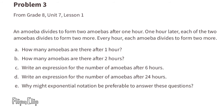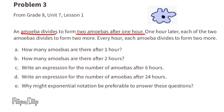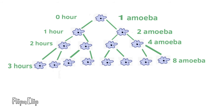Problem 3, from 8th grade Unit 7 Lesson 1: An amoeba divides to form 2 amoebas after 1 hour. One hour later each of those 2 divides to form 2 more, and every hour each amoeba divides to form 2 more. Sketching this out: hour 0 has 1 amoeba, hour 1 has 2, hour 2 has 4, and hour 3 has 8.